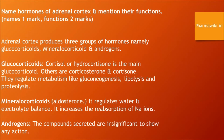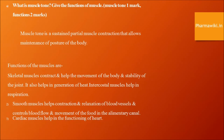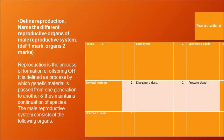Define reproduction and name the organs of the male reproductive system. Reproduction is the process of formation of offspring, or the process by which genetic material is passed from one generation to another, thus maintaining the continuation of species. The male reproductive system consists of testes, epididymes, spermatic cords, seminal vesicles, ejaculatory ducts, prostate glands, urethra, and penis.